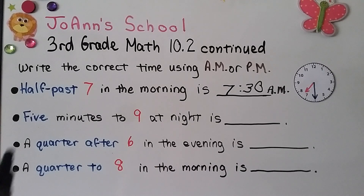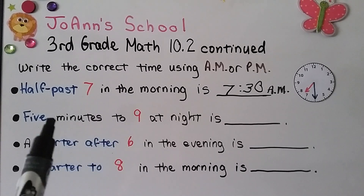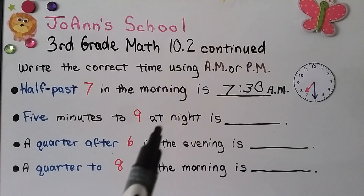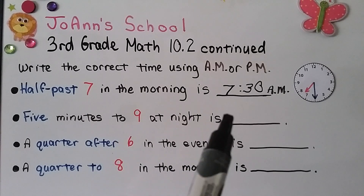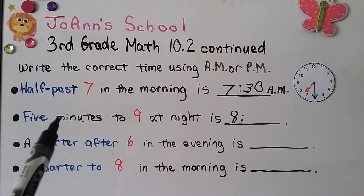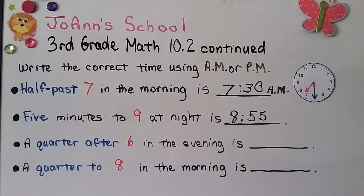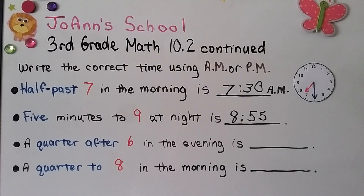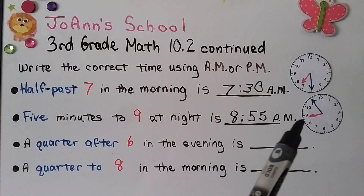This one says five minutes to nine at night. So it's not nine yet — it's five minutes before nine, and it's nighttime. If it's five minutes to nine, we know the hour is eight. There are 60 minutes in an hour; take five away and we get 55. So the time is 8:55 P.M. Our clock would show the minute hand on the 11, not quite at the nine yet.